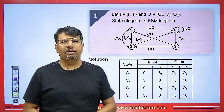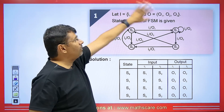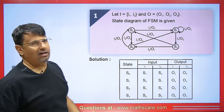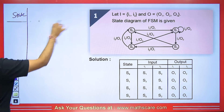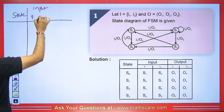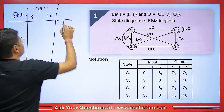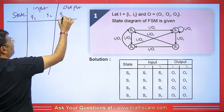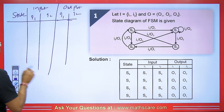Let us move ahead and try to understand some questions. In this question, the inputs given are I1 and I2, and three outputs are given: O1, O2, and O3. From this diagram, what we have to do is make a table. We will write the state here. We have two inputs, so we will write input I1 and input I2, and the output corresponding to each input.